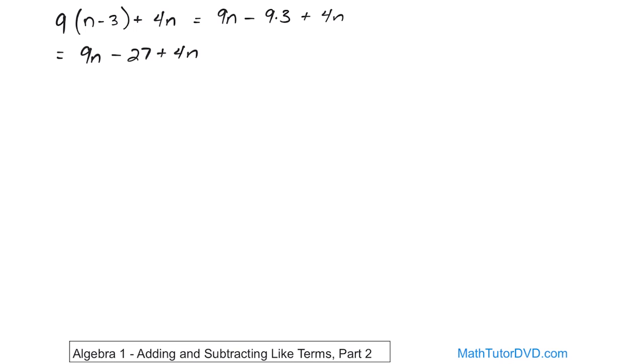Now look at this. Which are the like terms? Here we have 9n's, here we have 4n's. So the variables match, so we can actually add those. It's positive and positive, so it's going to be really easy. 9 plus 4 is 13n's, so you have to carry that n along for the ride. And then the minus 27, the minus sign comes from here, the 27 goes there.